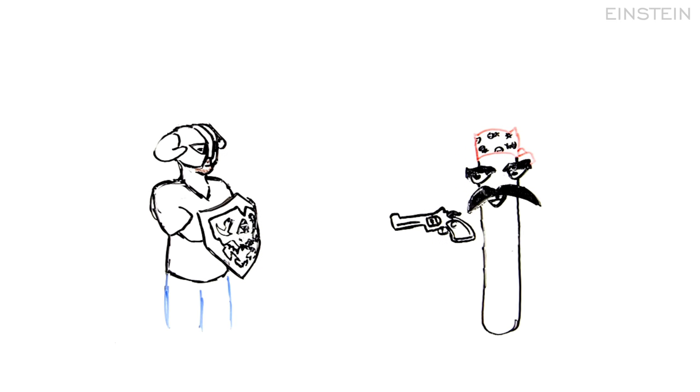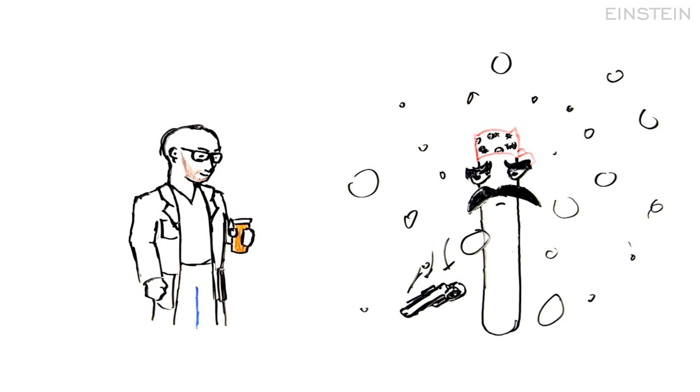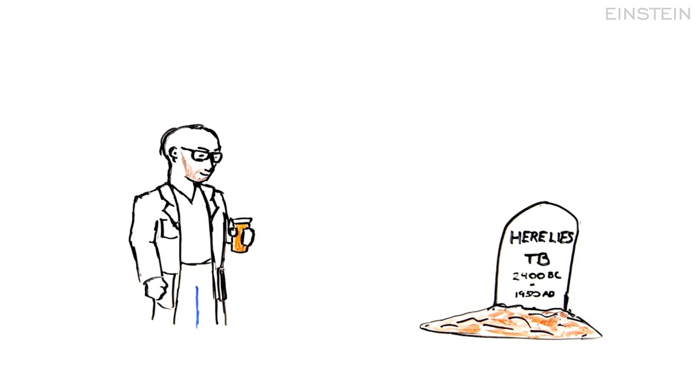TB had the upper hand in this arms race in the Middle Ages and much of the 20th century. But then in the 1950s, antibiotics were developed that were effective at combating tuberculosis. These antibiotics led us to what we thought was a decisive victory against tuberculosis.